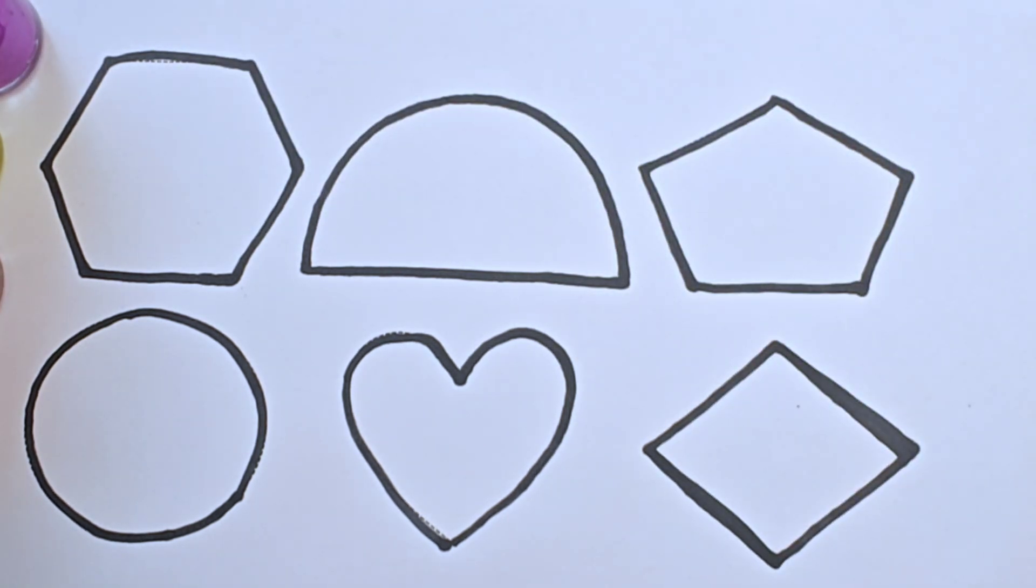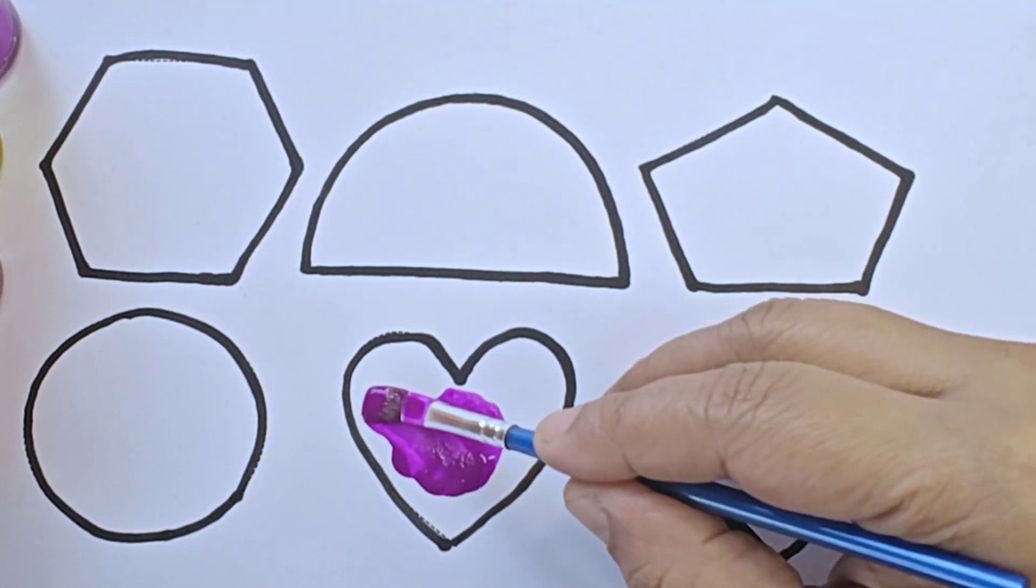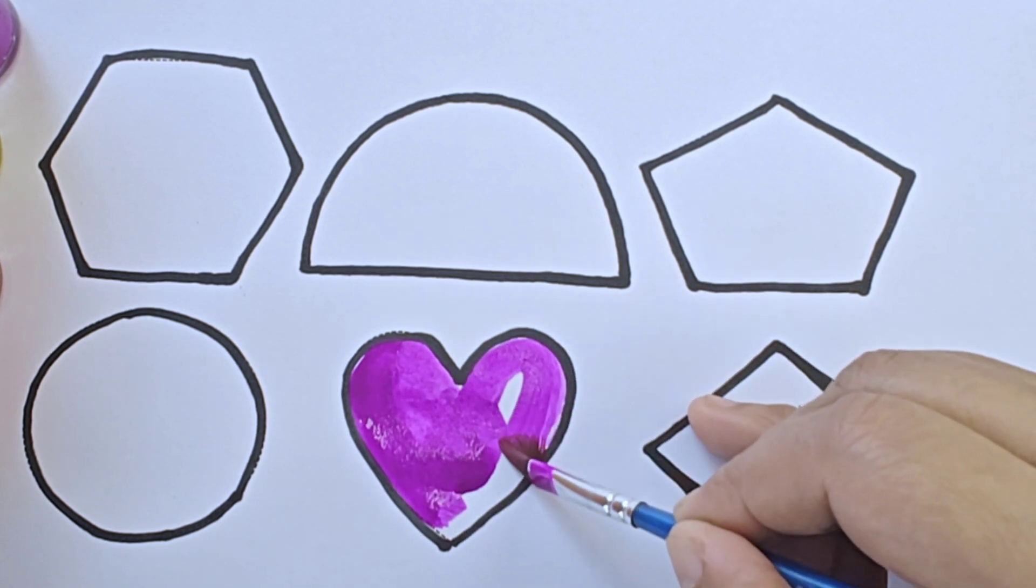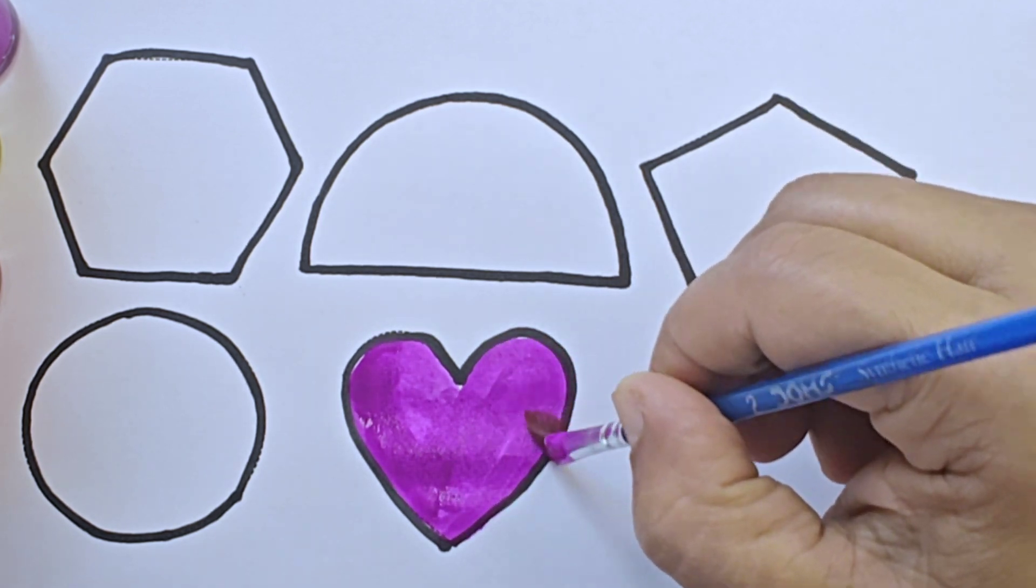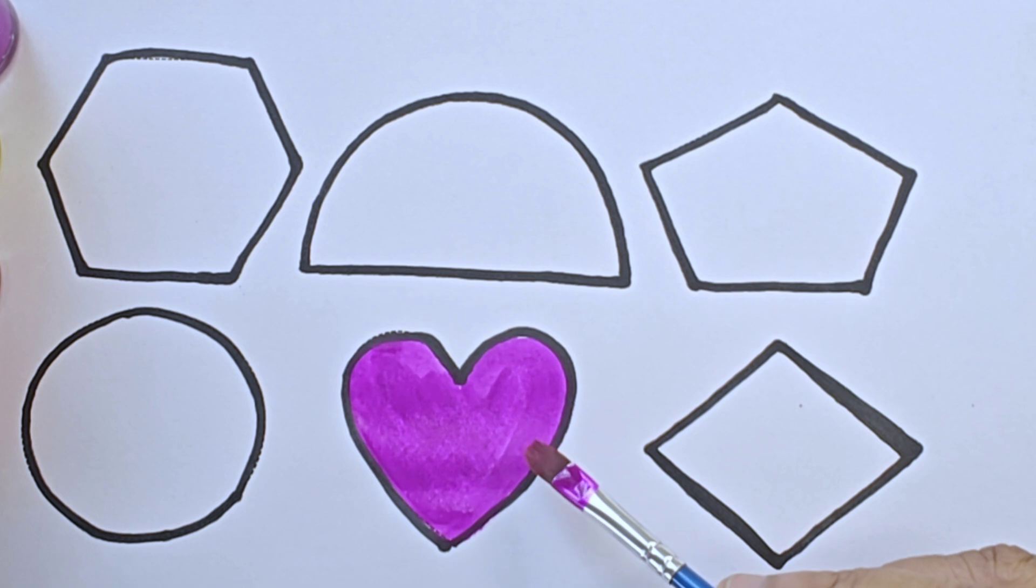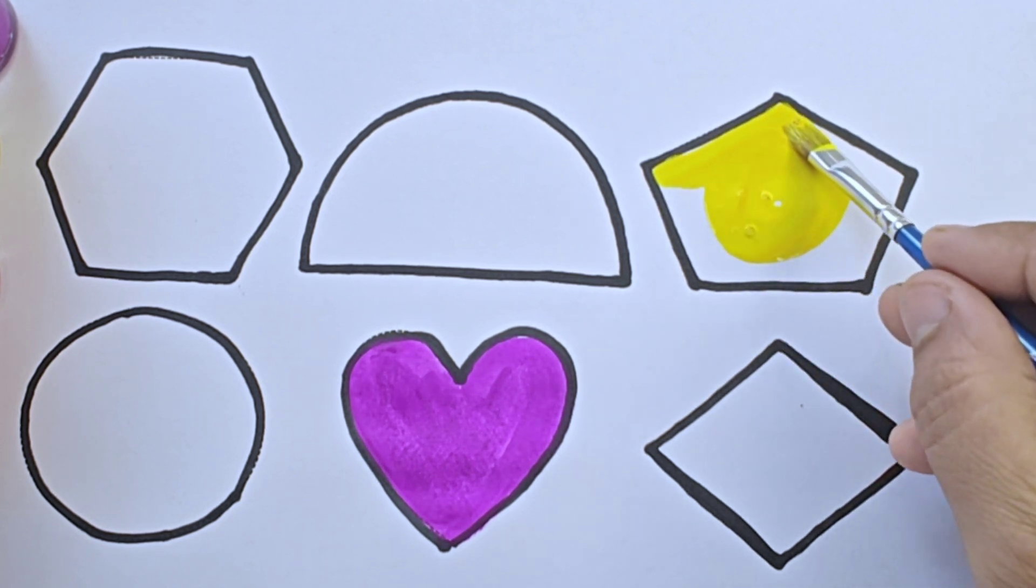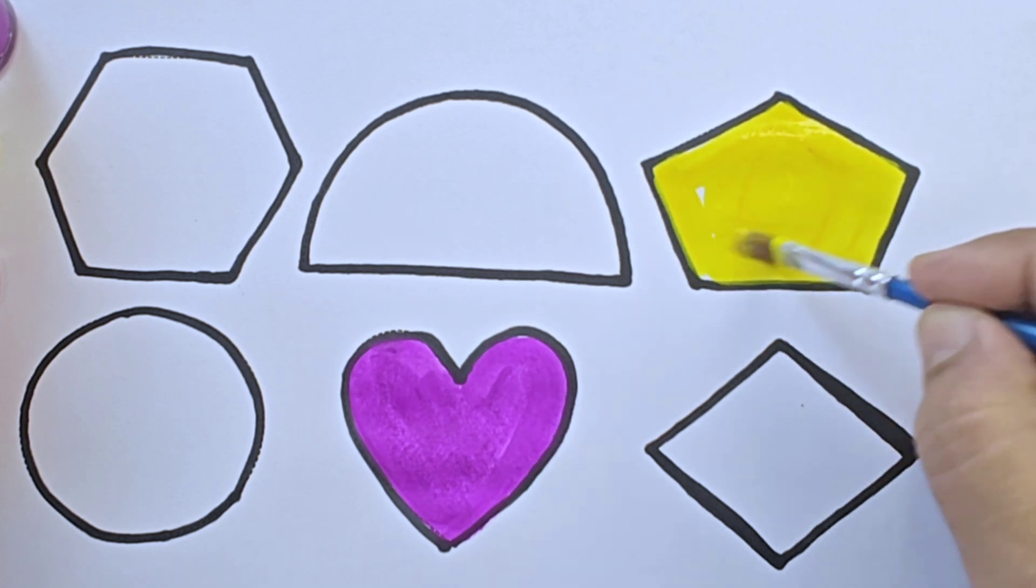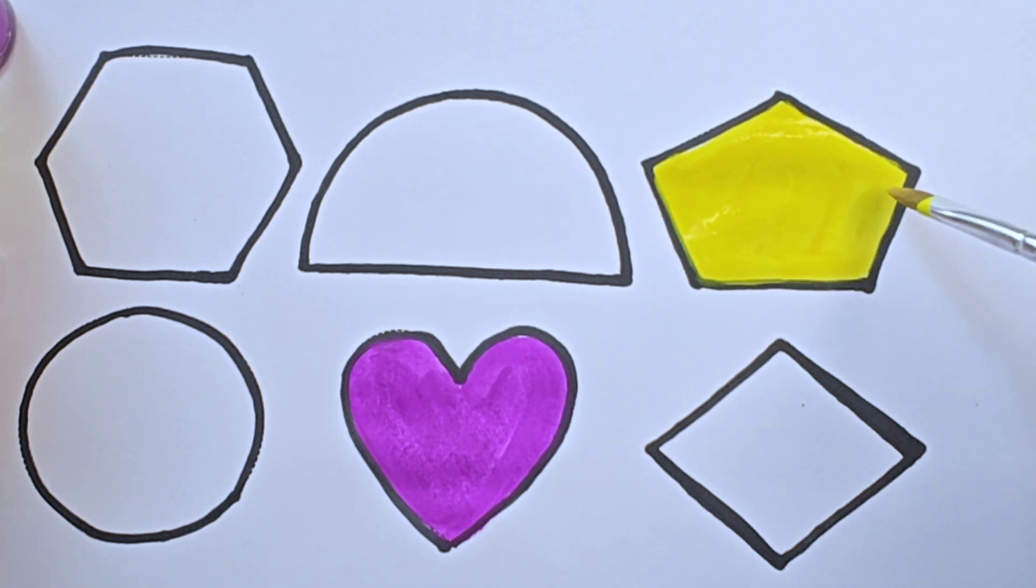Let us color the shapes. It is purple color. It is heart. Heart is a shape. It is yellow color. It is pentagon. It has five sides. One, two, three, four, five. Five sides.